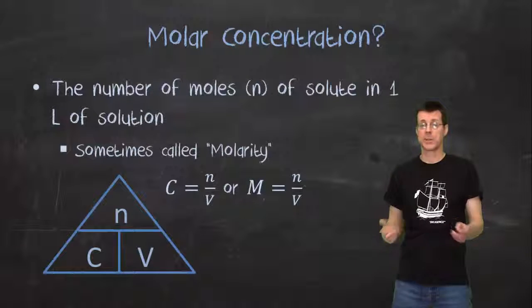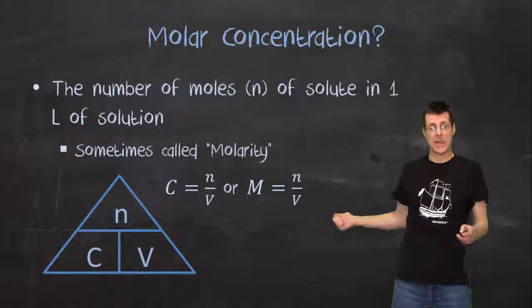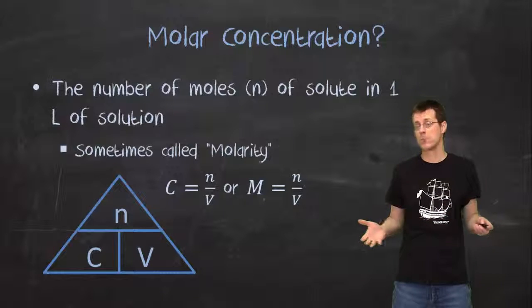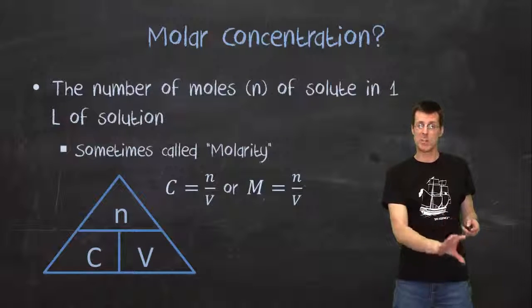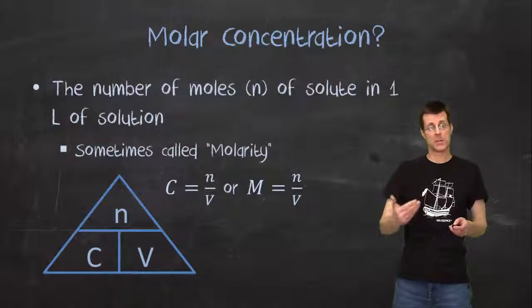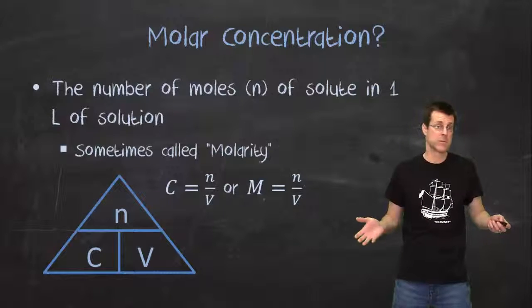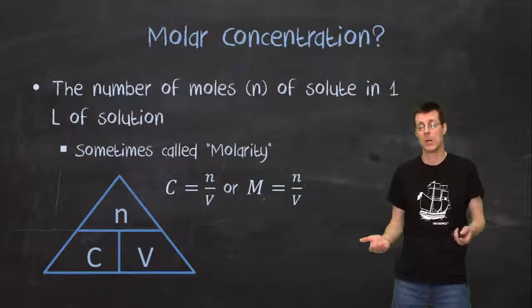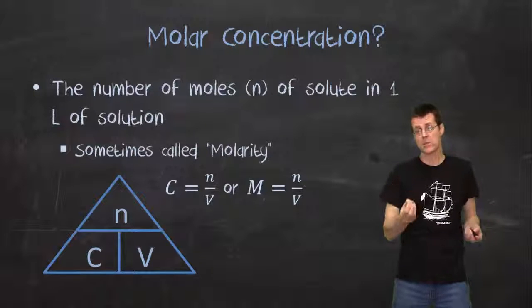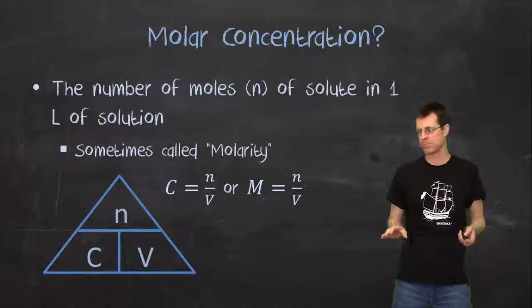We can do a triangle. I want you to pay particular attention to the position of the n, the number of moles. With the molar mass formula, number of moles was one of the bottom corners. Now, it's on the top corner, which means when we start using both triangles, either in the same question or in different questions, we're going to need to keep them straight. The good news is if you think about the units and pay attention to the units, it's all taken care of.